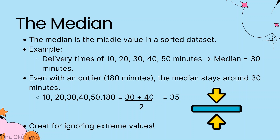Next up is the median, which is the middle value of your data when sorted from smallest to largest. Going back to our delivery times example, the middle number is 30, so the median is 30 minutes. Now if that one crazy delivery time of 180 minutes is added, the sorted list becomes 10, 20, 30, 40, 180 — but the median is still 30 minutes, because it ignores outliers and focuses on the middle of the pack.